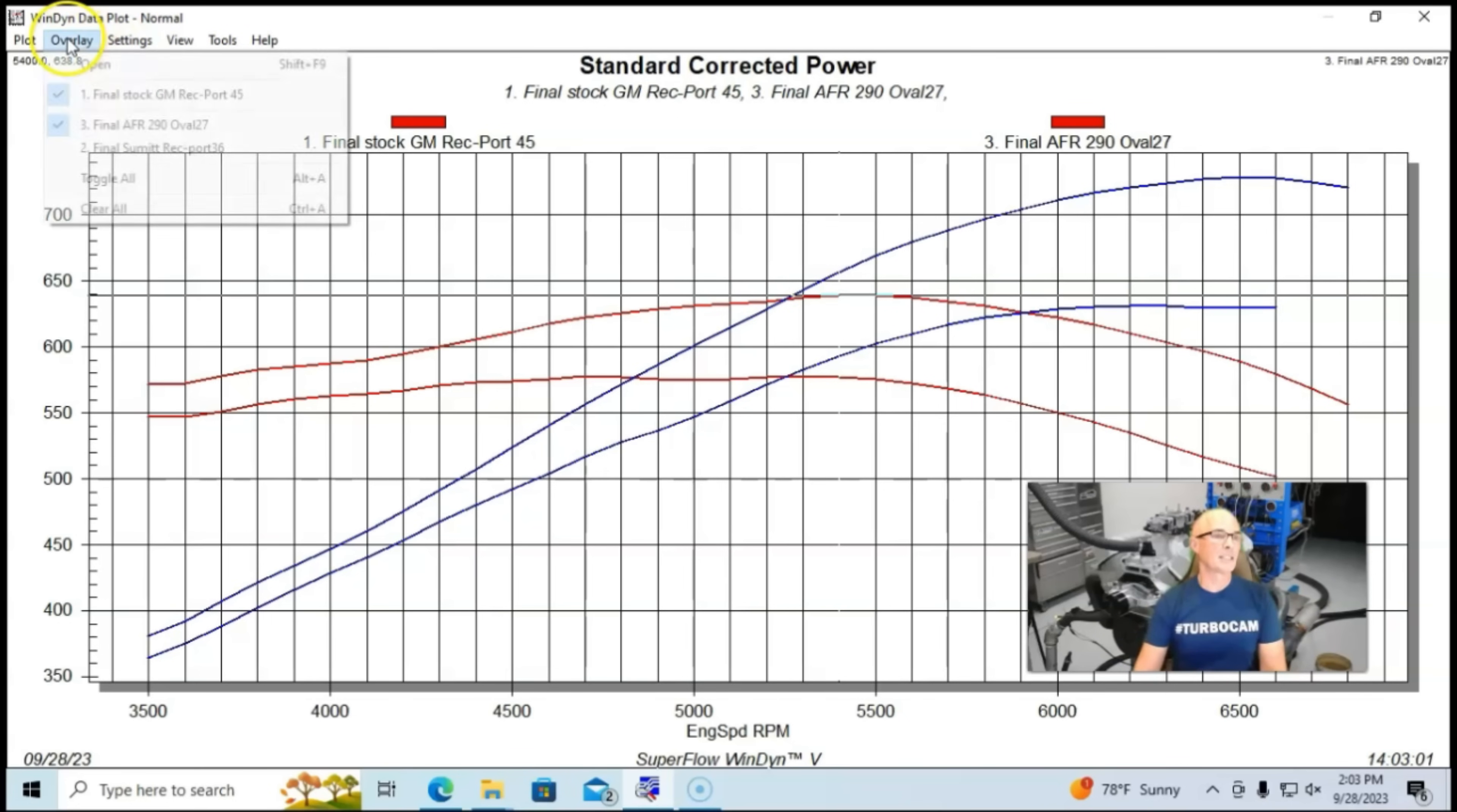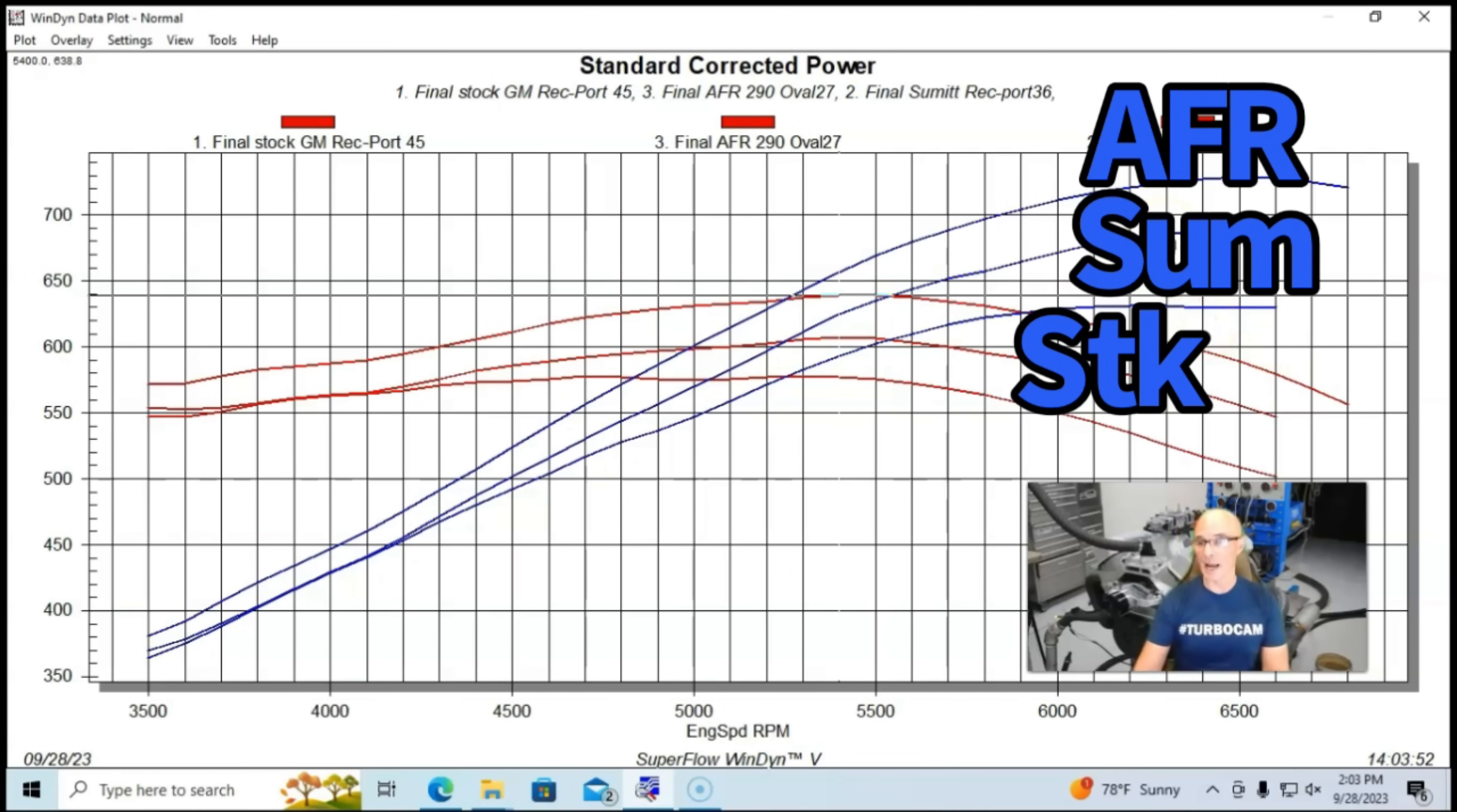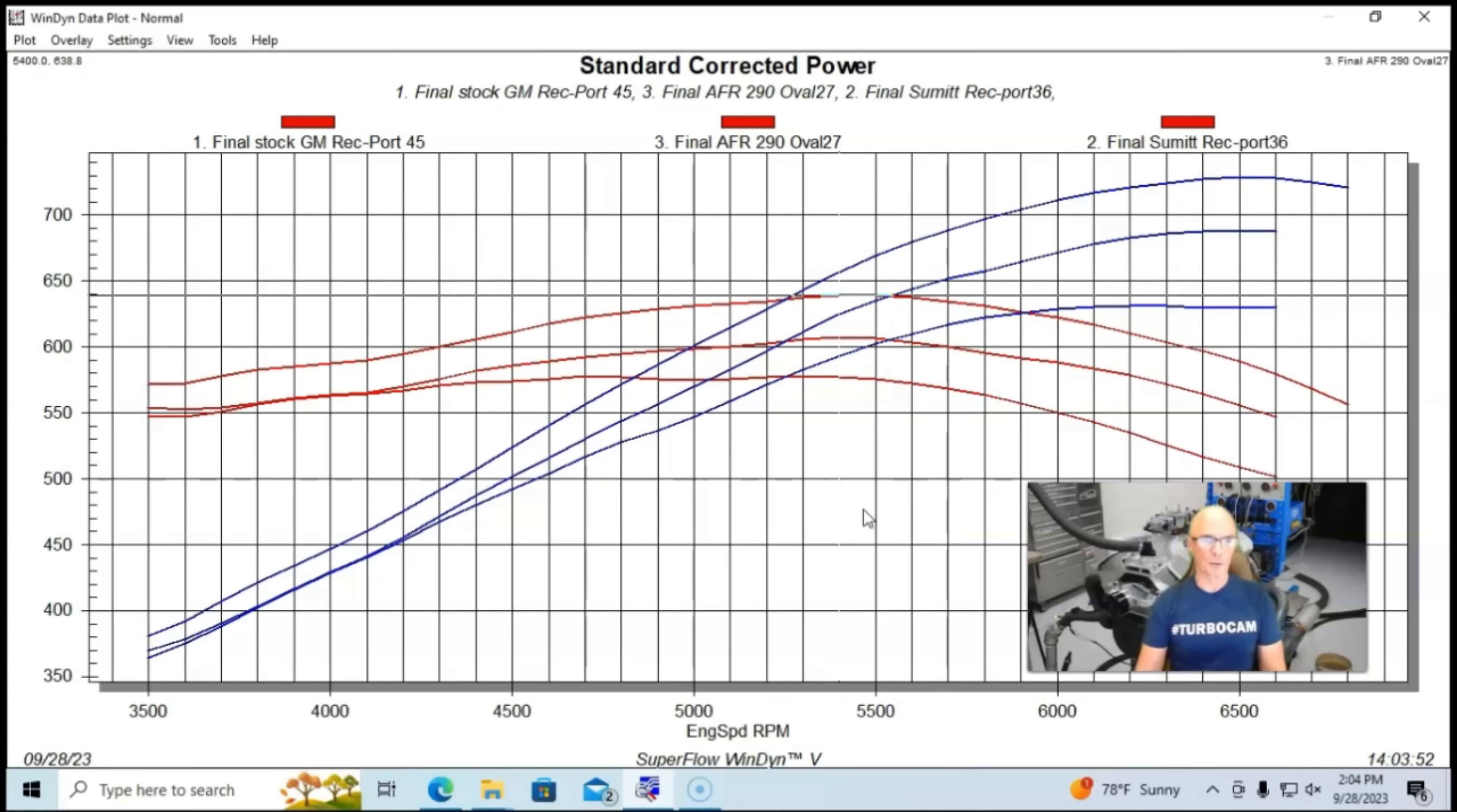To give you an idea so people can understand, here's what it looked like: this is the factory head, and then in the middle here is our Summit iron head, and then above that is your 290 Airflow Research oval port head. You can see we're making really good gains. We're talking about 638 or 639 foot-pounds of torque with the Airflow Research head. It was basically better everywhere. You can see even all the way down at 3,500 RPM, the Airflow Research was a better combination.